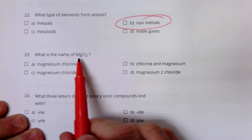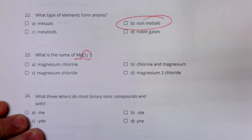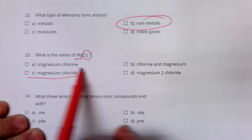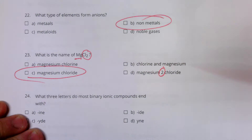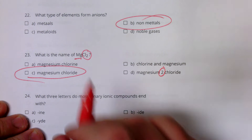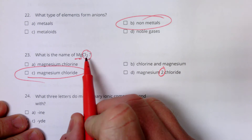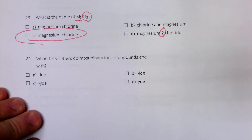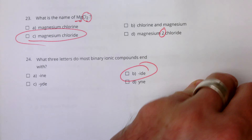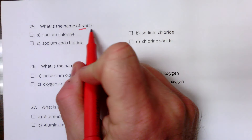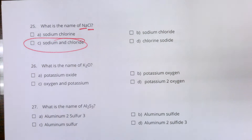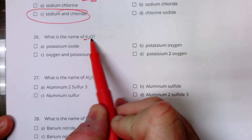What is the name of an ionic compound? Say the name of the first element — for example, magnesium — then take the name of the second one, chlorine, and put 'ide' on it: magnesium chloride. Most binary ionic compounds end in 'ide.' For example: sodium and chlorine is sodium chloride, potassium and oxygen is potassium oxide.